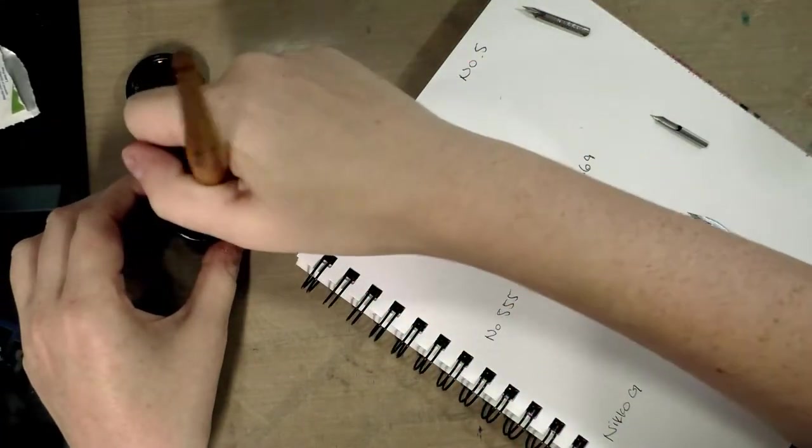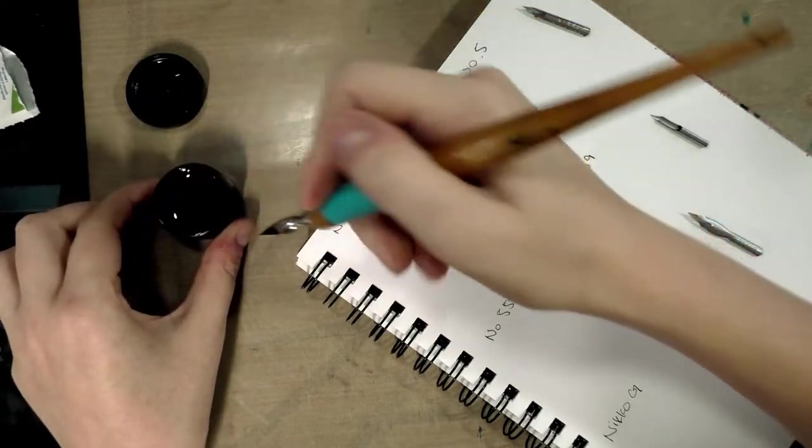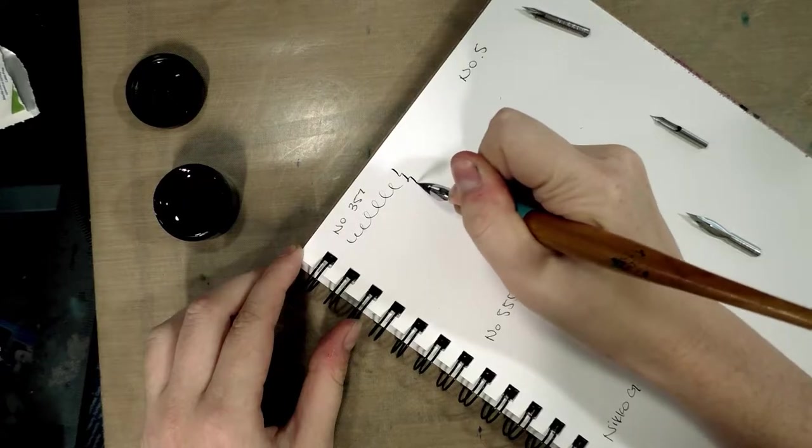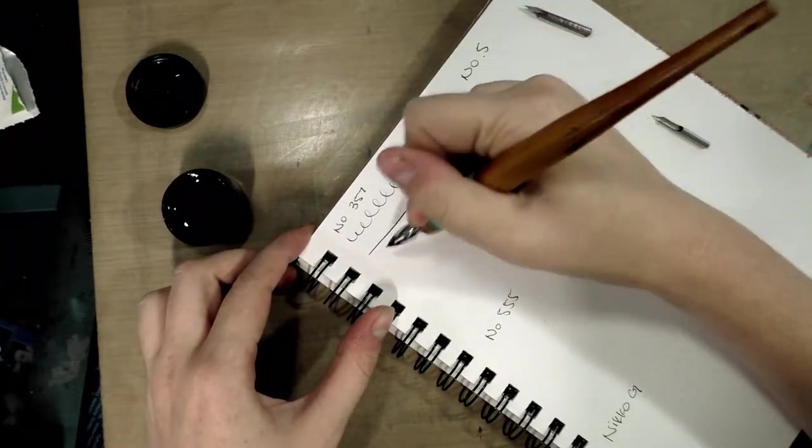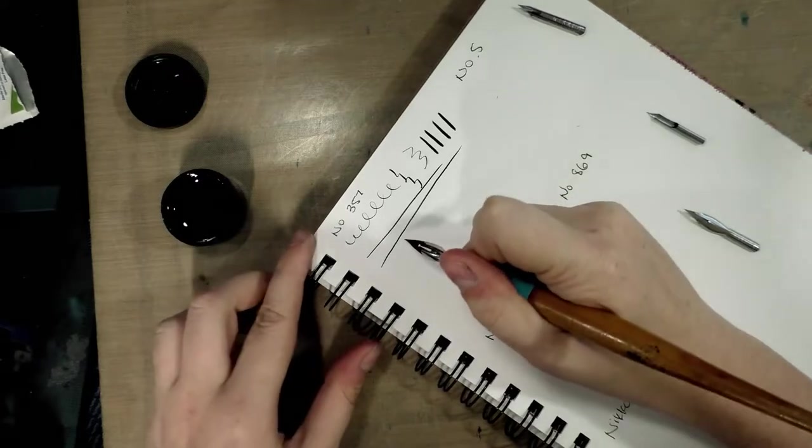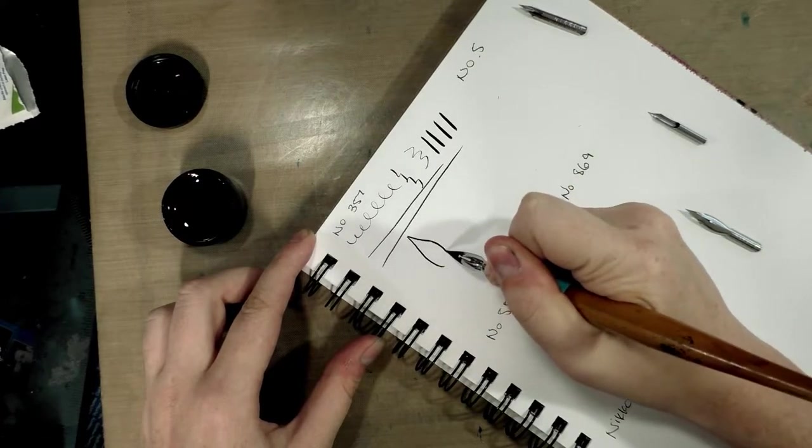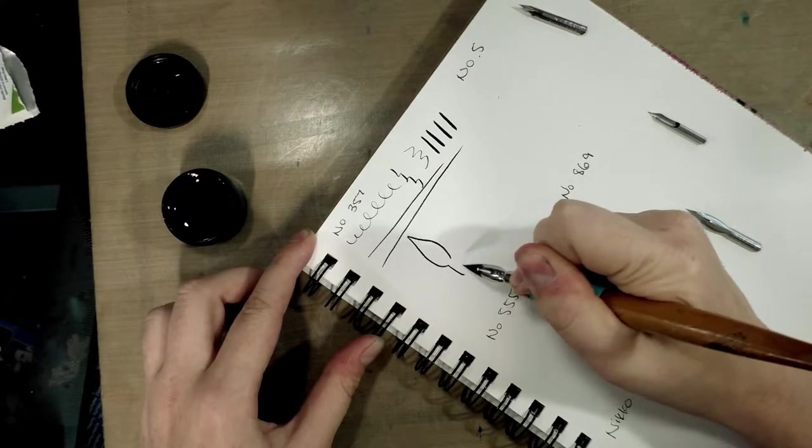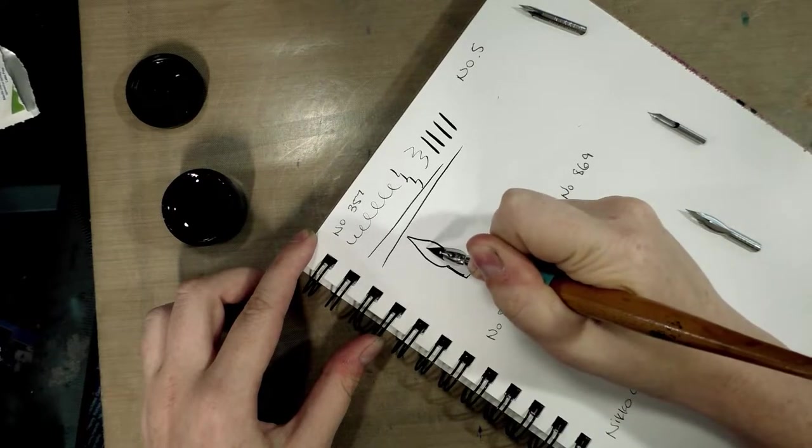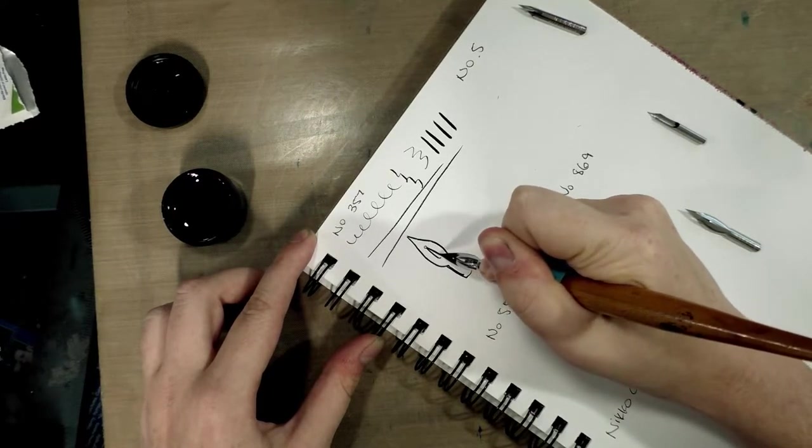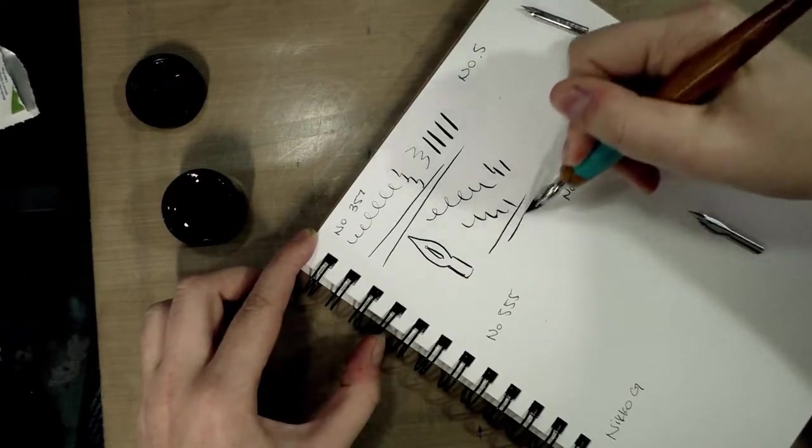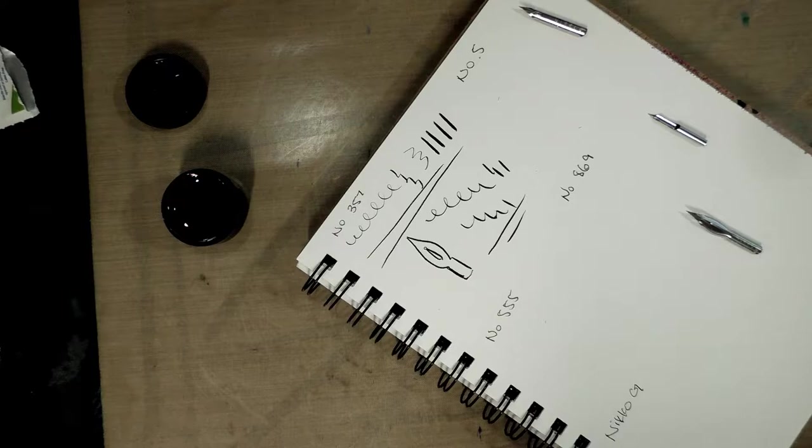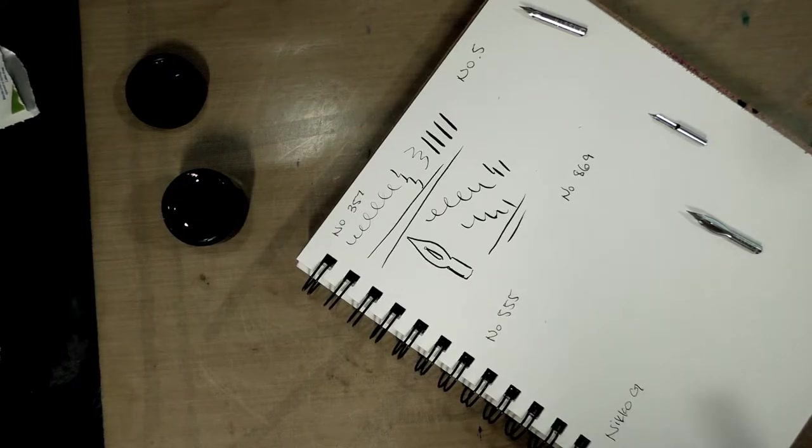We're going to start with one of the two spoons, the number 357. Fine, some amount of flex, doesn't nip too much into the paper, which is nice because this Denix paper is not super nice to ink on. And I'll do a little doodle of the nib for my own reference because otherwise I will forget. This is a good one, definitely worth experimenting with later.